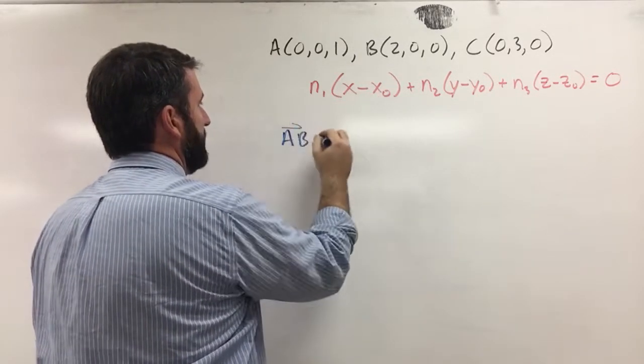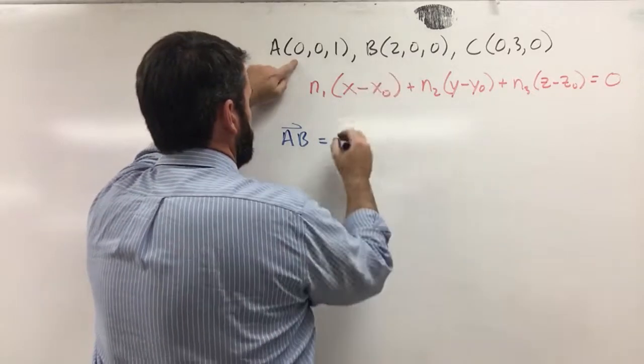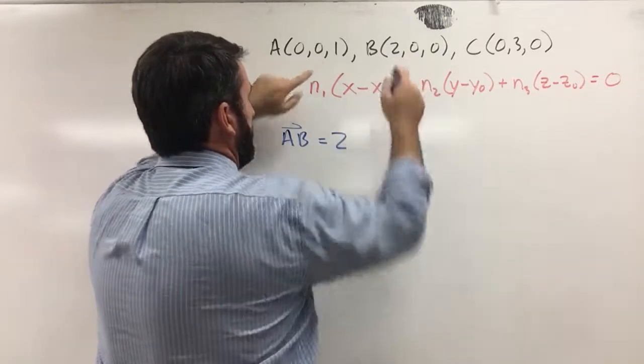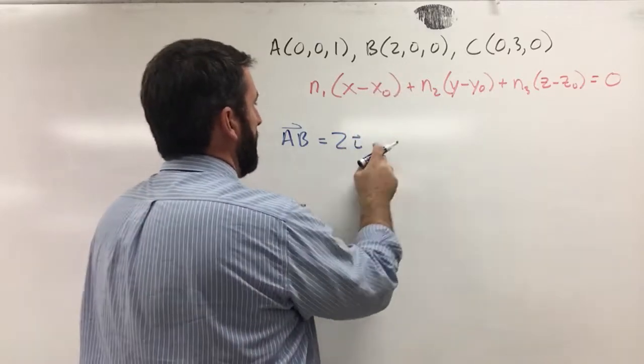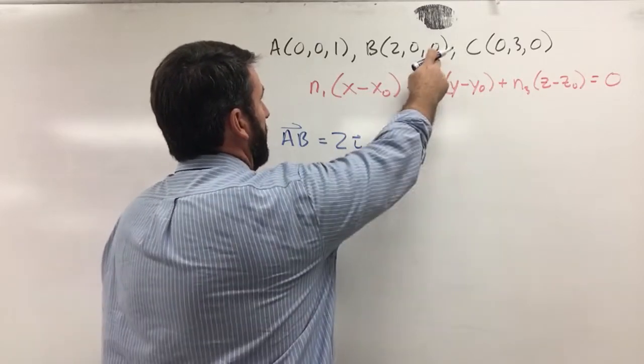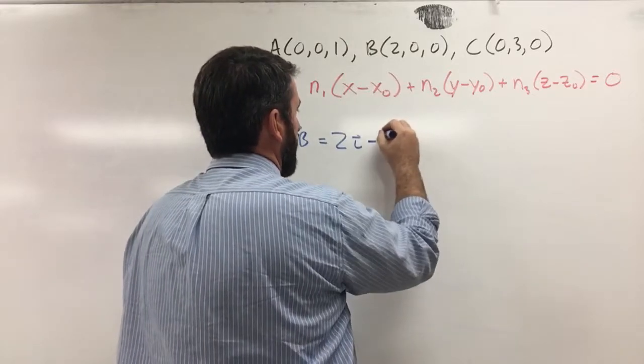So vector ab is going to be equal to 2 minus 0 is 2. 0 minus 0 is 0. So 2i plus 0j, 0 minus 1 is negative 1k.